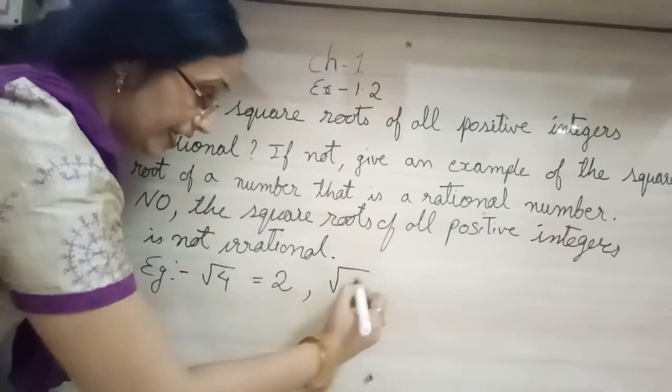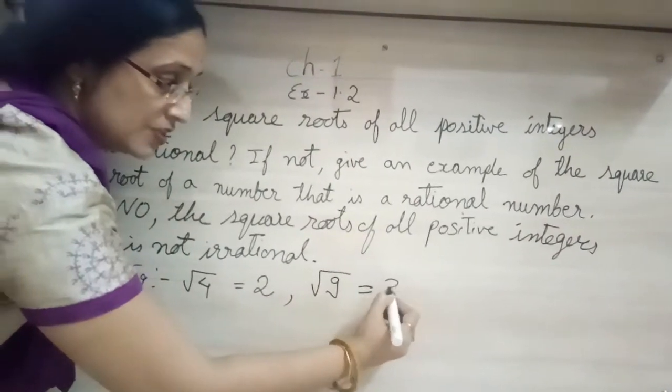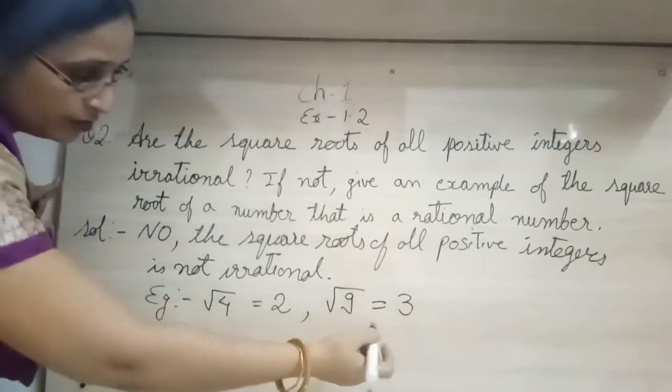Again, let us take an example, square root of 9. What answer will come? It is 3. So 3 is a rational number, it is not an irrational number.